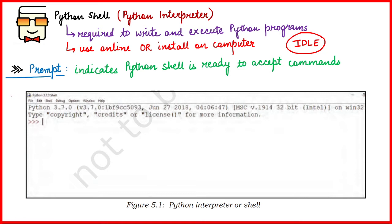Whenever you install Python on your computer, if you go to your Start menu and type the word IDLE, a window will appear on your screen. This is a typical Python shell — or Python interpreter — as shown on the screen.